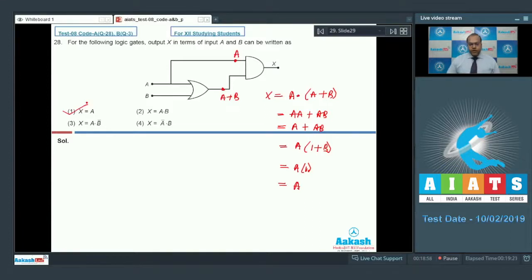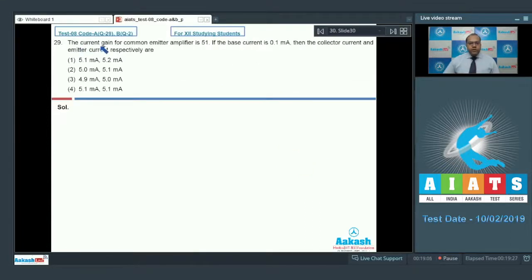Let's move to question number 29. In question number 29, the current gain for common emitter amplifier is 51. If the base current is 0.1 mA, then the collector current and emitter current respectively are. We know that current gain beta is equal to IC by IB.